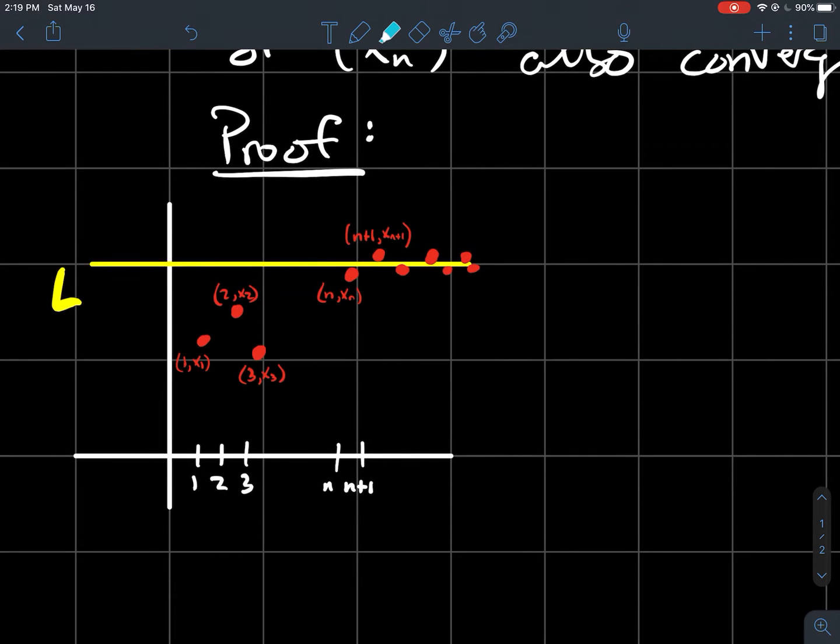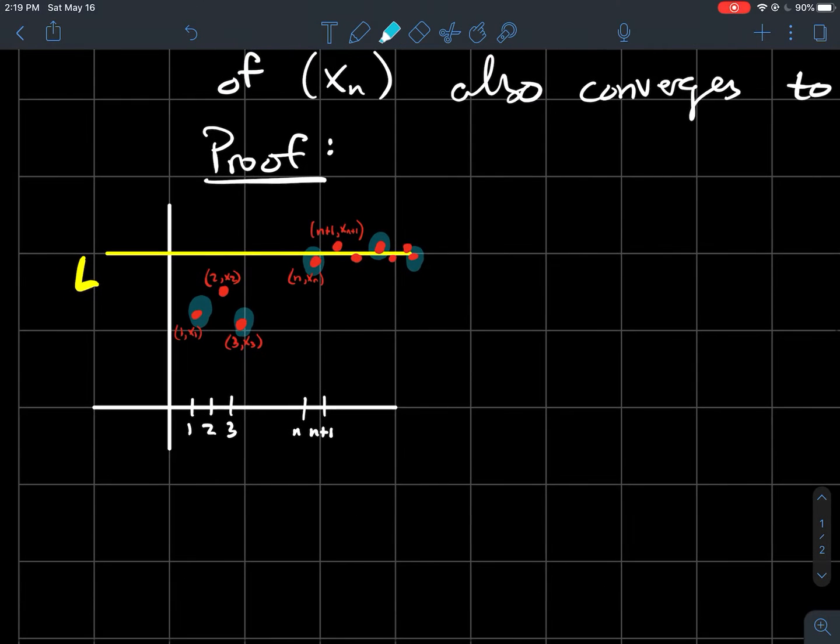So if my sequence xn converges, maybe it looks something like this. As I go farther to the right, the points should cluster around L. How do you make any subsequence? Well, you're just picking not all the points at a time. And so the point is, any subsequence that I make, well the farther you go to the right, my highlighted ones also have to start to cluster around L. That's what this is trying to say.